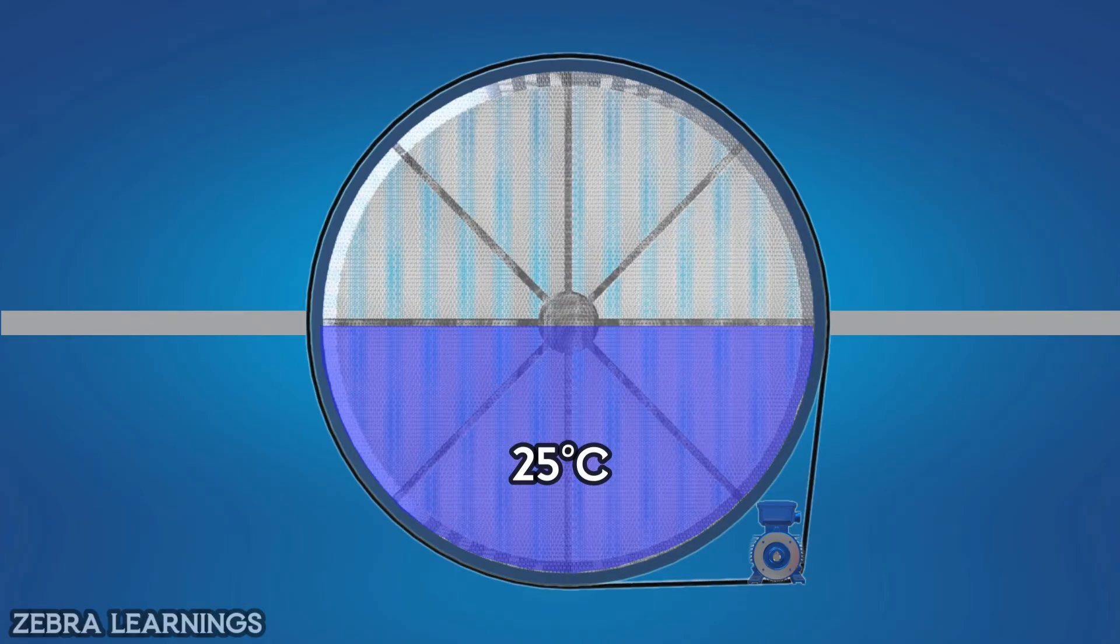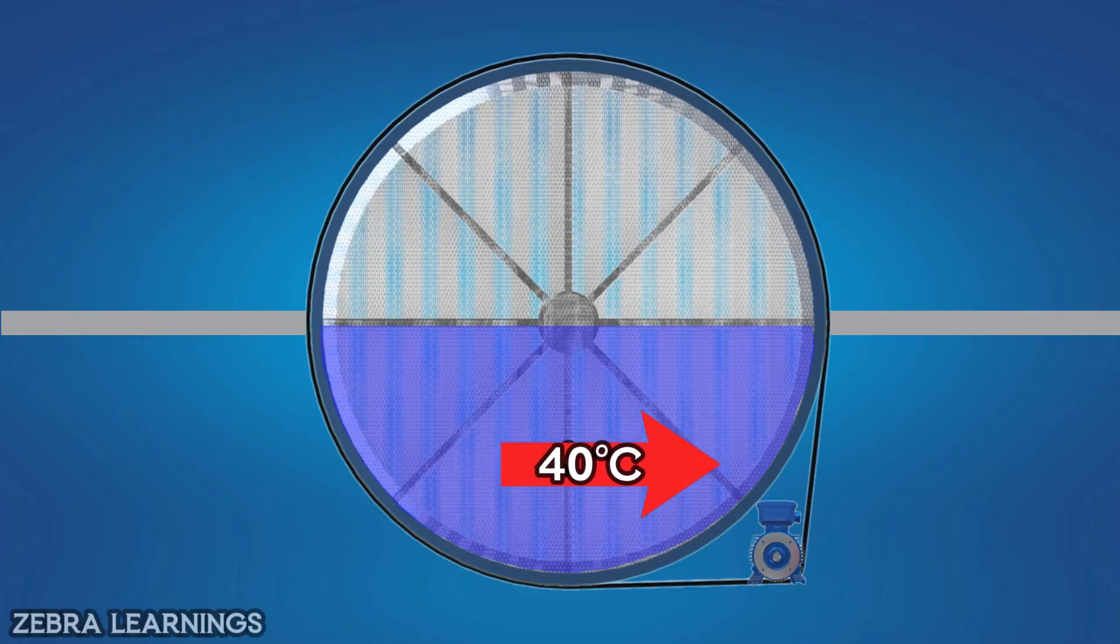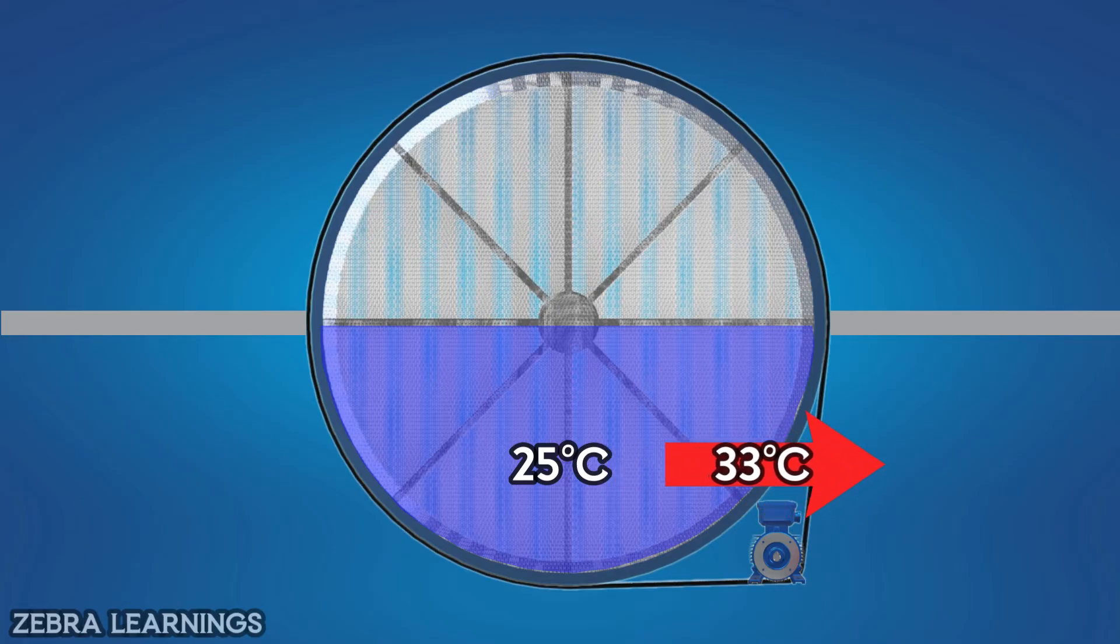The outside air comes in at 40 degrees Celsius in the lower part. Air at a temperature of 40 degrees Celsius travels through a thermal wheel at a temperature of 25 degrees Celsius, and the air temperature drops to exit the thermal wheel at 33 degrees Celsius.